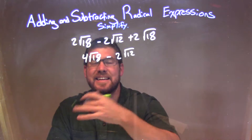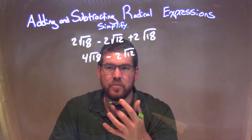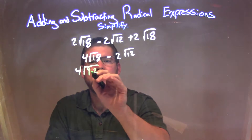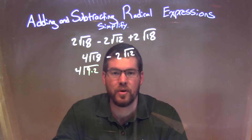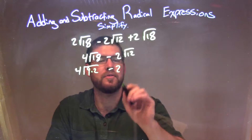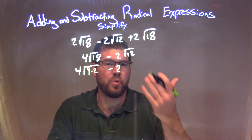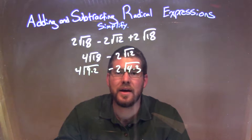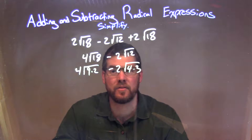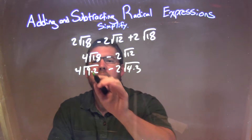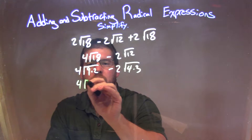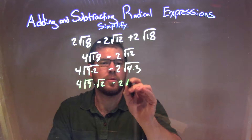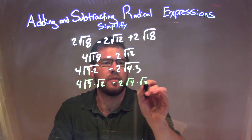Now let's break down the square roots. 18 is 9 times 2, so we have 4 times the square root of 9 times 2. I chose 9 times 2 because I knew I could take the square root of 9. And 12 is 4 times 3 — I chose 4 times 3 because I knew I could take the square root of 4. So I can break each one individually: 4 times square root of 9 times square root of 2, minus 2 times square root of 4 times square root of 3.